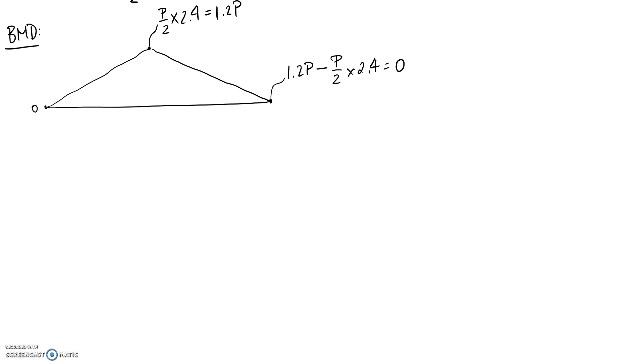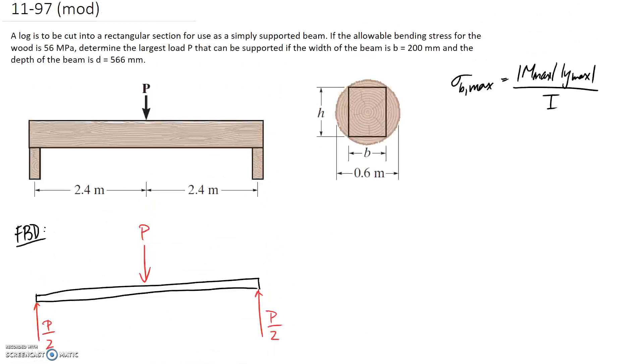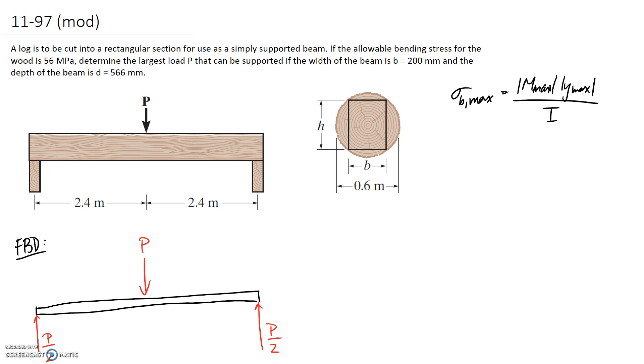The reason that we've gone ahead and drawn this is because we want to be able to find the maximum moment in our system, and we're interested in the absolute value of it. So the biggest number that we can possibly get is this 1.2P, the peak of our diagram. So that's what needs to be substituted into our equation for bending stress for the maximum moment. Scrolling back up, what we need to work on now is finding y max and I, and this relates to looking at the cross section.